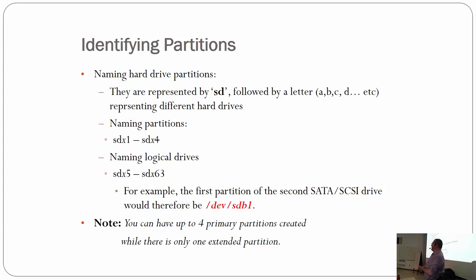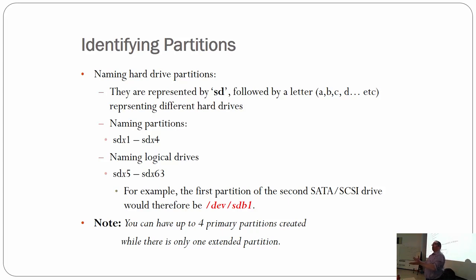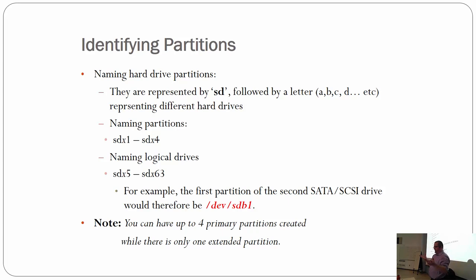The swap partition is used when you run out of RAM. It starts swapping memory out to that partition. Windows has something similar called the swap file — don't delete it. You can have four primary partitions and around 50-odd extended partitions, theoretically letting you slice a drive into about 63 chunks, though that's excessive.